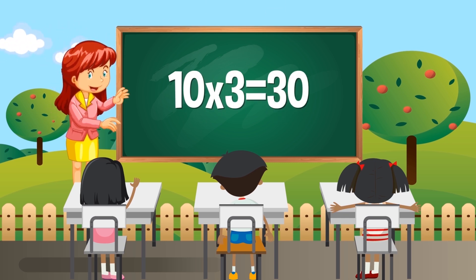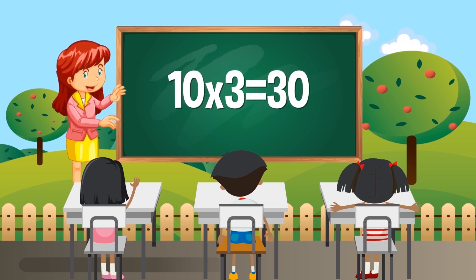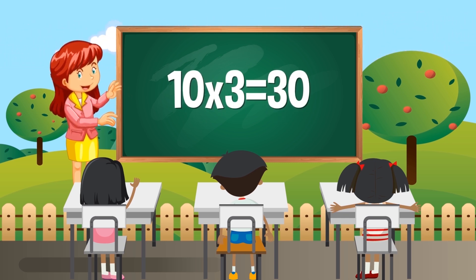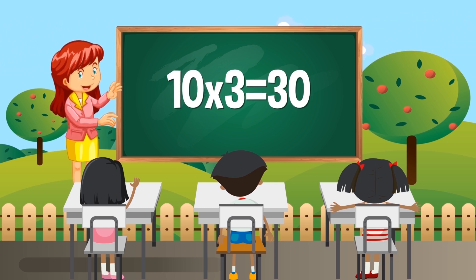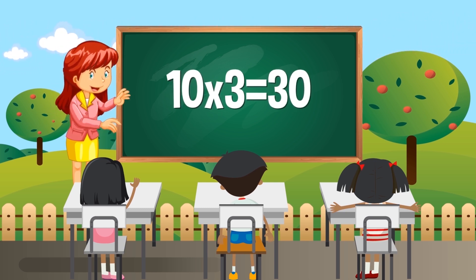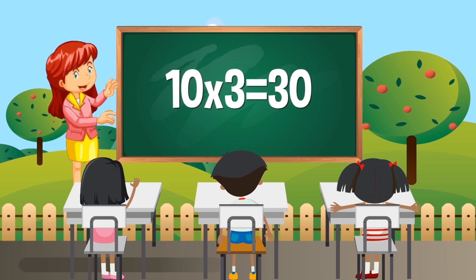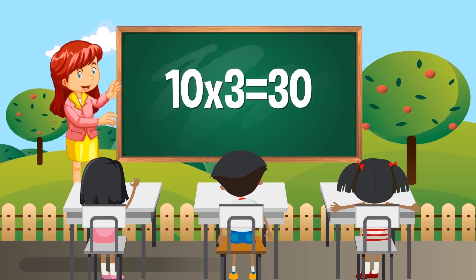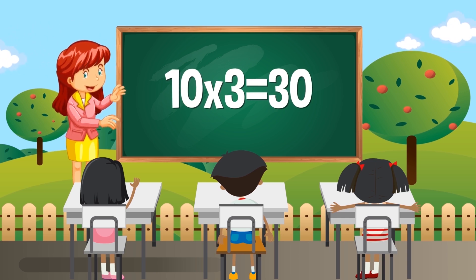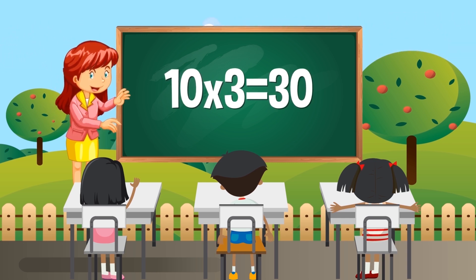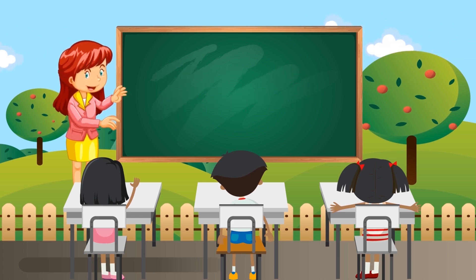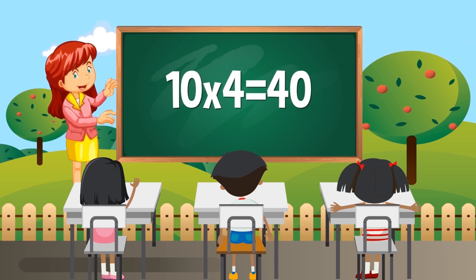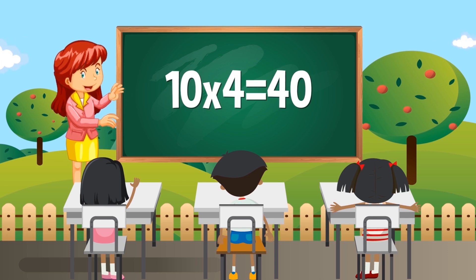Ten times three equals thirty. Ten times four equals forty.